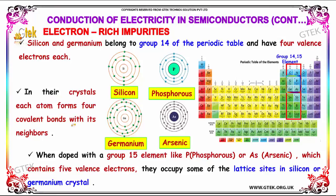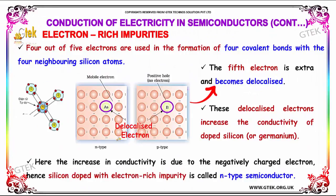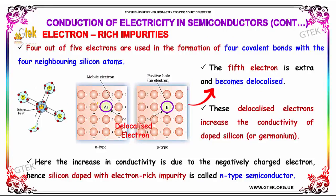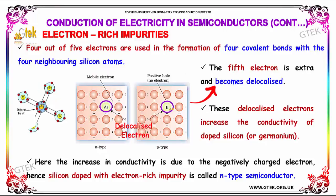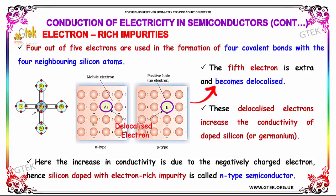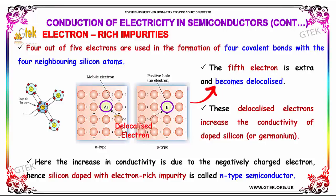In the crystal, each atom forms four covalent bonds with its neighboring atom. When doped with a group 15 element like phosphorus or arsenic, which contains five valence electrons, they occupy some of the lattice sites in silicon or germanium crystal. Four out of five electrons are used in bonding, with one electron remaining. The fifth electron is extra and becomes delocalized, increasing the conductivity of doped silicon or germanium. Since the increase in conductivity is due to the negatively charged electron, silicon doped with an electron-rich impurity is called an n-type semiconductor.